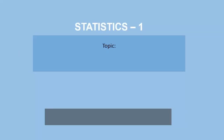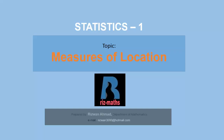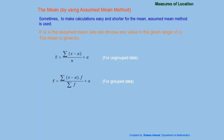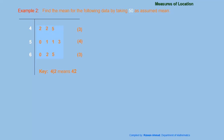This video is a continuation of the previous video about measures of location. In this video I will explain finding the mean by using the assumed mean method, and also finding the median using linear interpolation. There is a formula for that. For the assumed mean method, there are two formulae: one for grouped data and one for ungrouped data. We will work through an example.